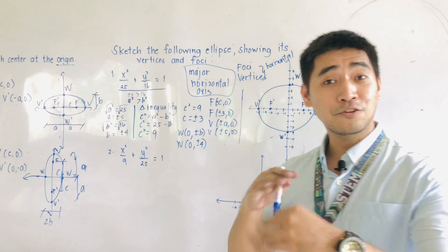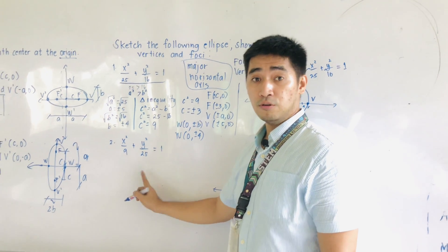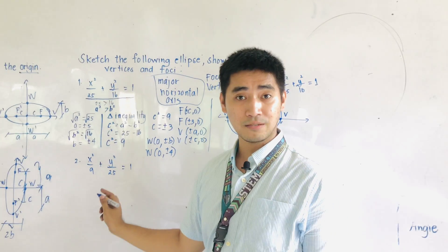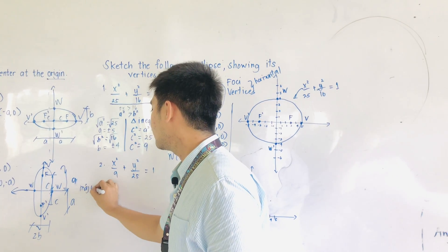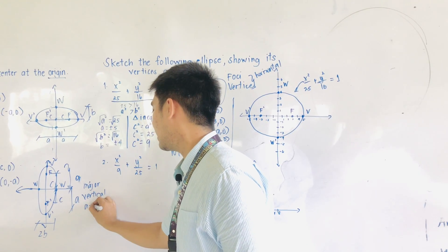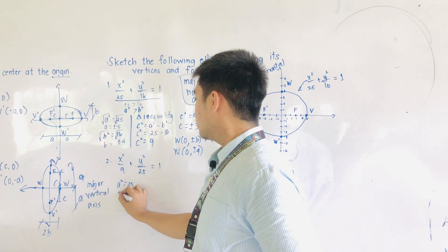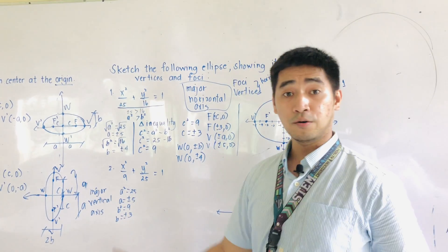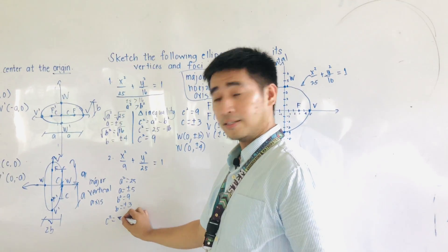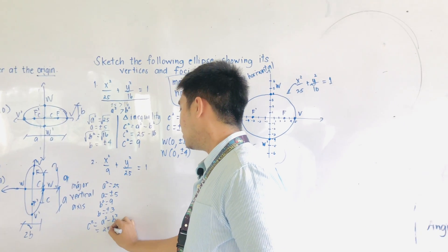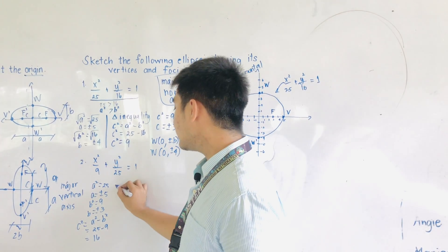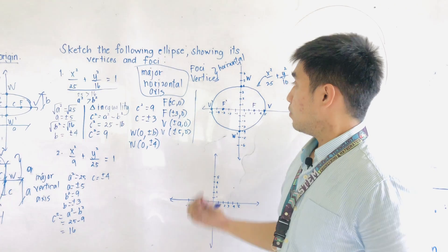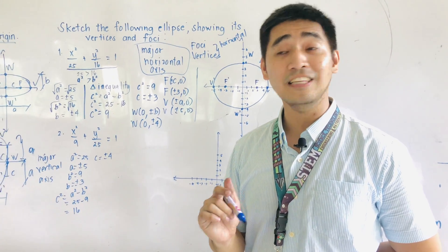Let's now work on the second problem, moving a bit faster since we know how to solve. Look at the example — check the denominators first. Which is the larger denominator, x² or y²? It's under y², therefore this is major vertical. So A² = 25, giving A = ±5; B² = 9, giving B = ±3. Therefore C² = A² − B² = 25 − 9 = 16, so C = ±4.